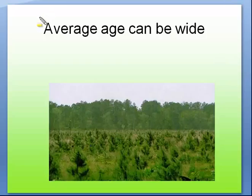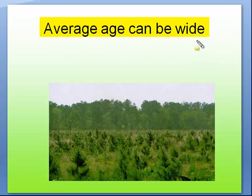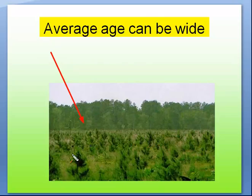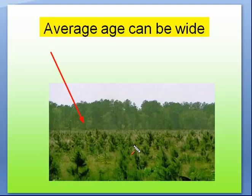The perception is that the age range after disturbance can be very narrow, but in actual fact the age range can be very wide. Here is typically what we think of after a major disturbance — you can see some red pine planted, all about the same age. That's if humans go in and plant those trees. But in nature it is quite different on many sites.